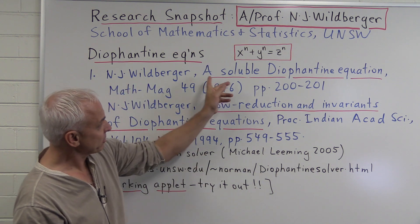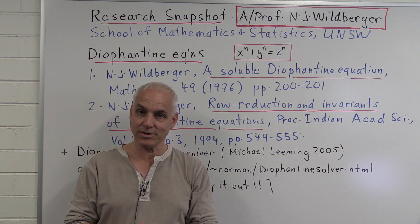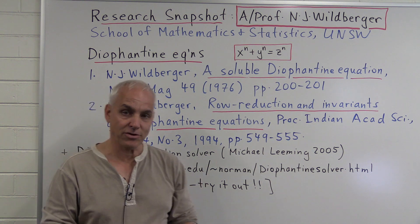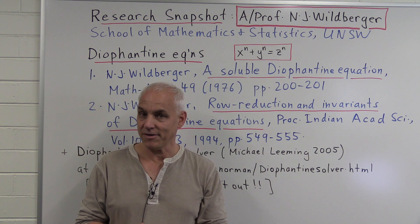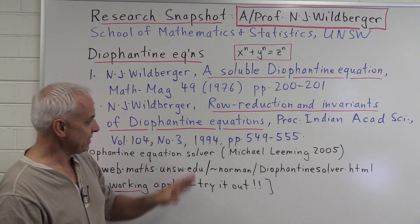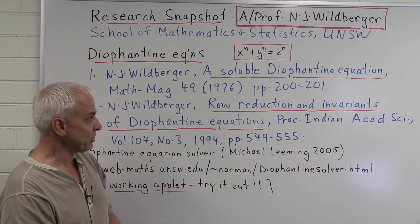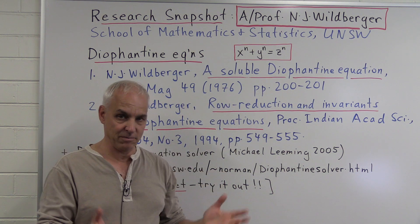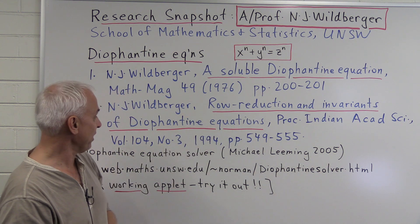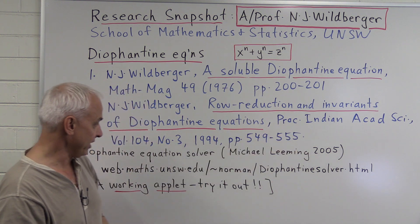The first paper is called 'A Soluble Diophantine Equation', which is the first paper I ever wrote as an undergraduate back in 1976. I have Professor Ed Barbeau of the University of Toronto to thank for encouraging me to write that paper. Then many years later, I thought about the subject on and off, and wrote this second paper, which enlarged and considerably expanded the earlier framework. It's called 'Row Reduction and Invariance of Diophantine Equations', and appeared in Proceedings of the Indian Academy of Science in 1994.